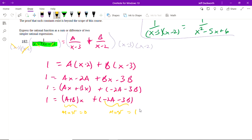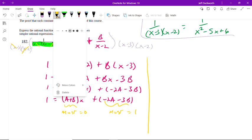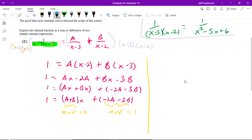So we have a set of linear equations. Let me do this over here, in fact. So I have A plus B equals 0. And negative 2A minus 3B has to equal 1.